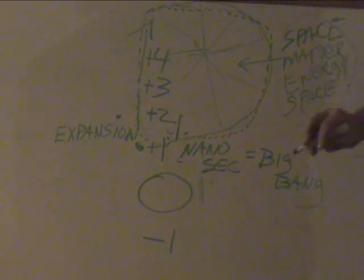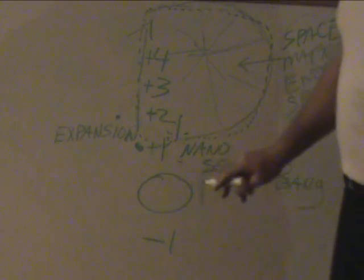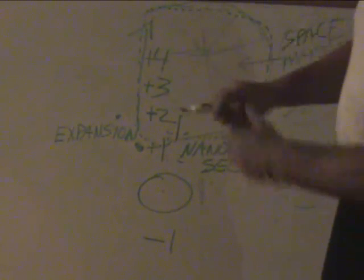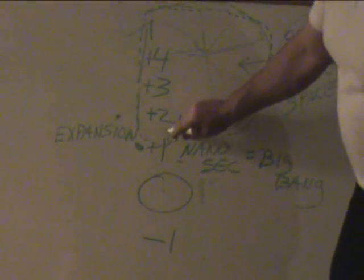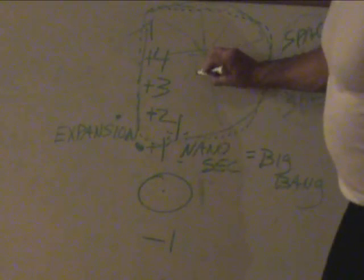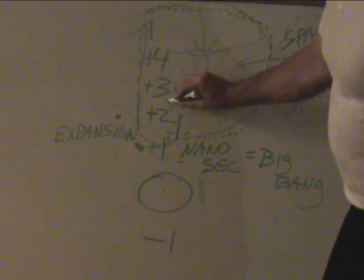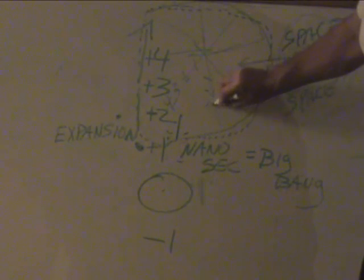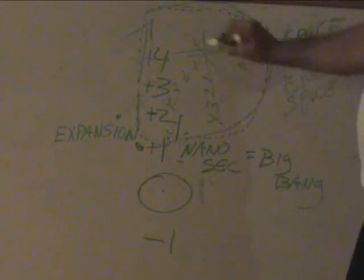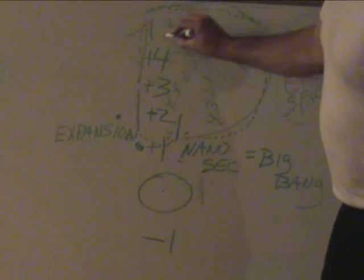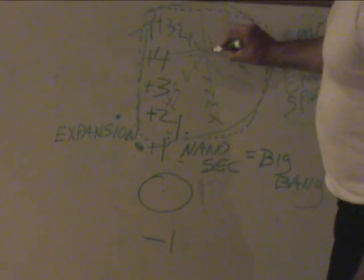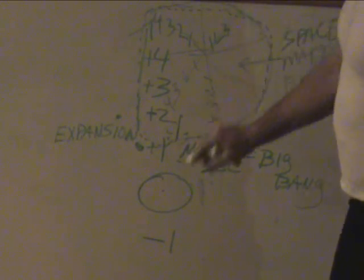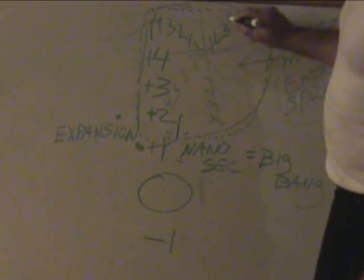To prove that the particle cannot be eternal, you realize the particle cannot exist before zero time — it only goes up, positive. Your positive numbers go like this: one, two, three, four in that direction. One positive, two positive, three positive, four positive. It's expanding in all directions in a positive way, not towards a negative way before zero time.